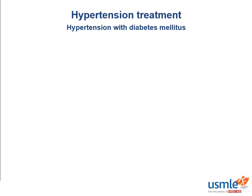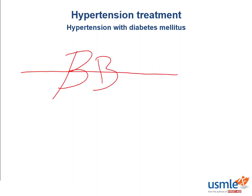How do you treat hypertension in patients with diabetes mellitus? This is really important because many of your patients with hypertension are also going to have diabetes. What antihypertensive should you use with caution in patients with diabetes? That would be beta blockers, because they decrease hypoglycemia symptoms.